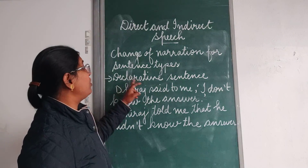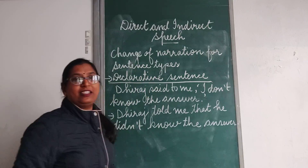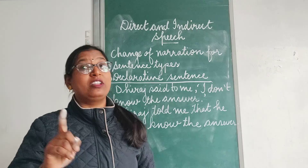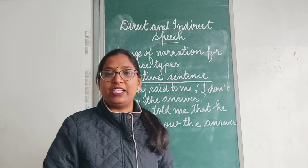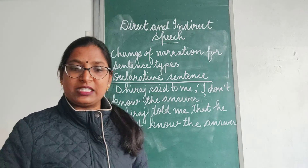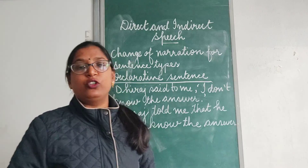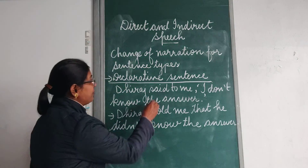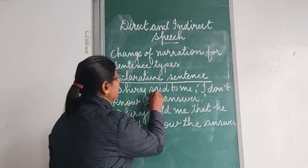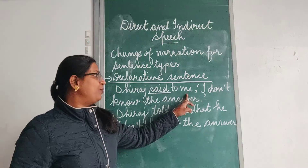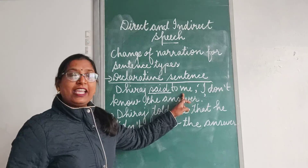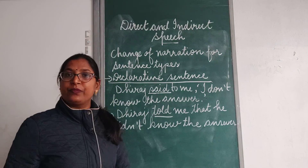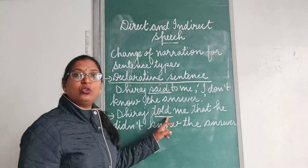First, we shall study about the declarative sentence. When the quoted speech is an assertive or declarative sentence, the reporting verb 'said' is changed to 'told' when an object is mentioned. After the introducing verb, if 'said' is followed by an object, when we change into indirect speech, 'said' will be changed to 'told' and 'to' will be omitted.